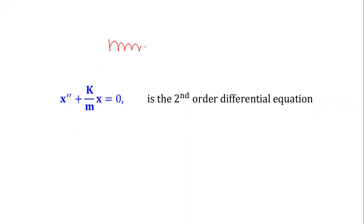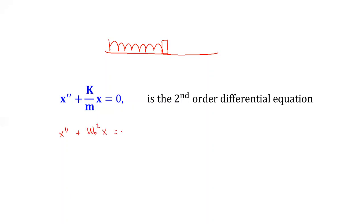So we can use both methods and at the end we get the same differential equation for the horizontal spring pendulum. This equation is of the standard mathematical form: x″ plus ω₀² · x equals zero, which is a second-order differential equation.